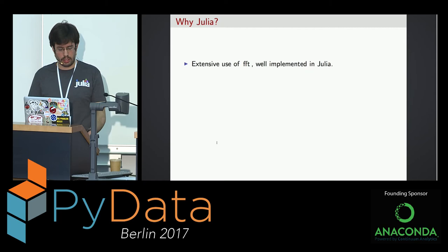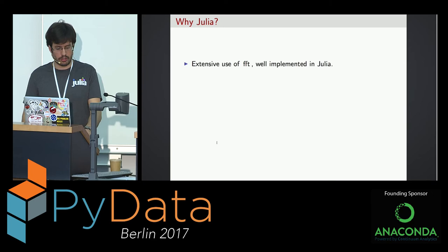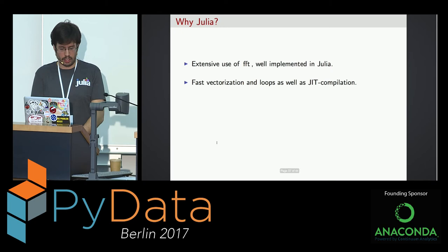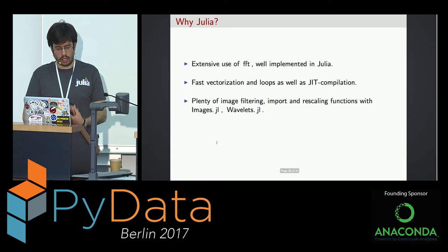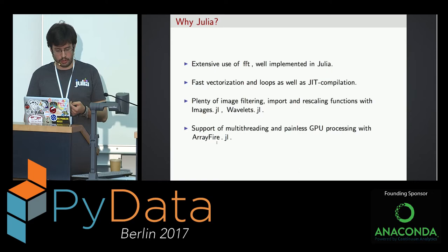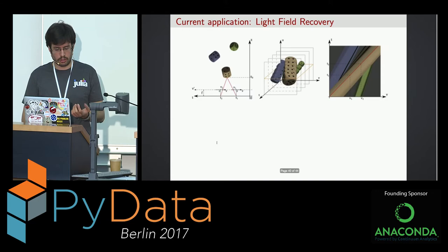MATLAB doesn't make sense for science because science should be open source. MATLAB also has complex matrices as its basic type, which causes slow for-loops when you're not working with them. That's why I made the Julia implementation. Julia is a great language for this: the shearlet transform uses extensive FFT, which is well implemented in Julia. Julia has fast vectorization, JIT compilation, plenty of image filtering and rescaling functions via Images.jl and Wavelets.jl, and support for multithreading and GPU processing via ArrayFire.jl.